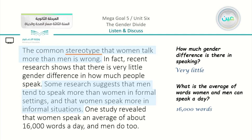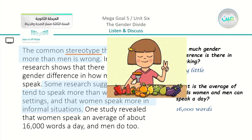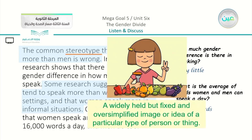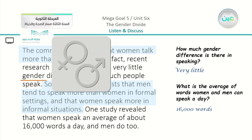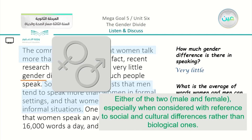We have two vocabulary words here. 'Stereotype' — relating to the picture of children not liking vegetables — is a widely held but fixed and oversimplified image or idea of a particular type of person or thing. 'Gender' refers to either one of the two — male and female — especially when considered with reference to social and cultural differences rather than biological ones.